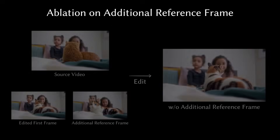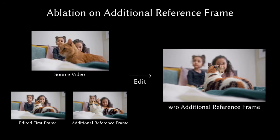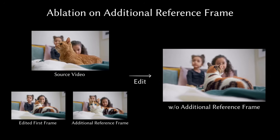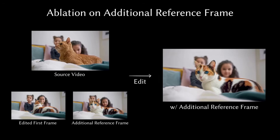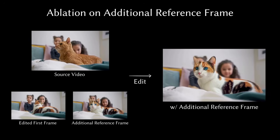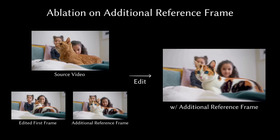Here's another one showing the power of a reference frame. In this first example, the AI changes the cat's fur but it looks a little generic. But then, by adding an additional reference frame, look at the bottom video — the cat's face and eyes are way more detailed and specific. It's a massive jump in quality.